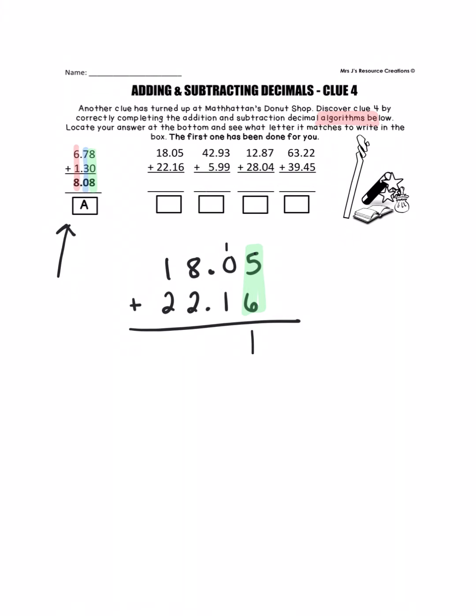One plus zero plus one more is two. We're going to drop down our decimal point. Eight plus two is ten. Put down the zero, carry the one. One plus one plus two is four. So our total here is 40.21.